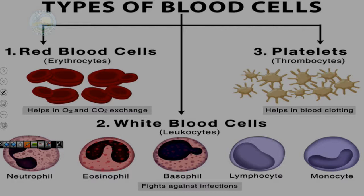So types of blood cells: you have red blood cells, your erythrocytes, whose function is to help in the exchange of oxygen and carbon dioxide. You have your platelets, which have a very important function in blood clotting. And then you have your white blood cells, your leukocytes, whose job is primarily to fight against infections.